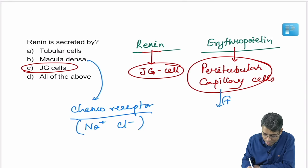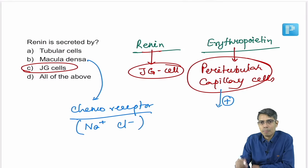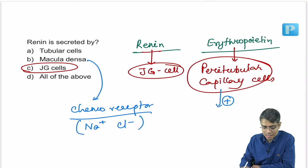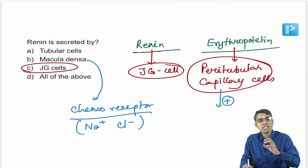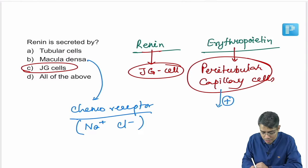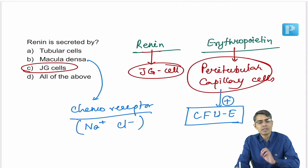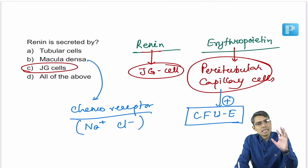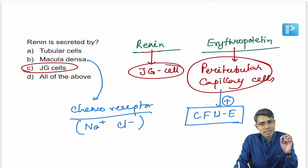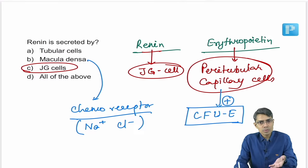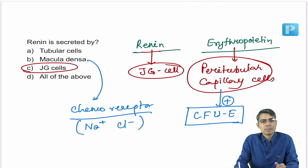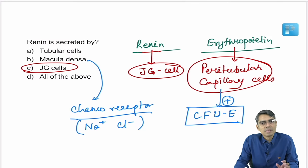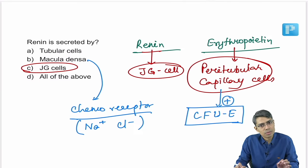Erythropoietin stimulates which stem cell in the RBC series? The answer is colony-forming unit erythroblast. This is the main cell where erythropoietin exerts its stimulation to increase RBC production.